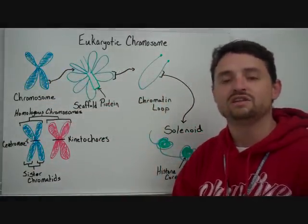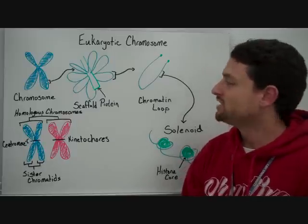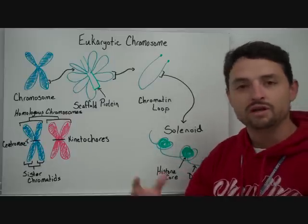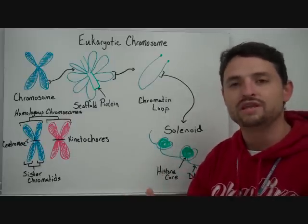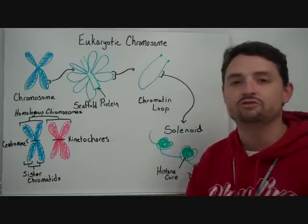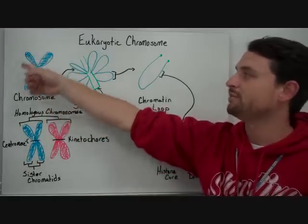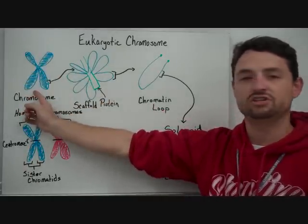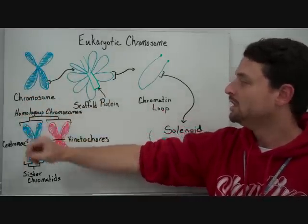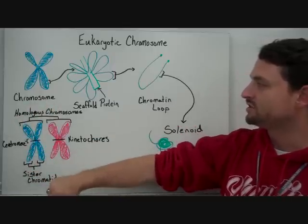So in eukaryotes, it's a little bit more complicated, and that's what we're going to look at from here on. First we want to look at the eukaryotic chromosome. Many times we draw them in this X shape — that is the chromosome.